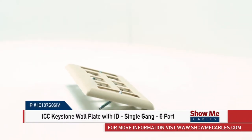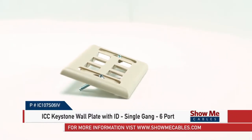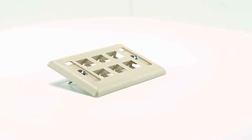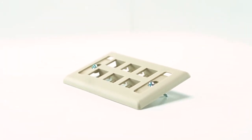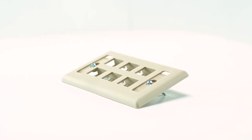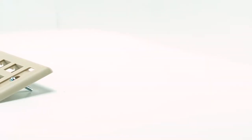This is the ICC keystone wall plate with ID, single gang, six port. Wall plates are a safety feature in your home or office and protect delicate cords and cables from dust and moisture.